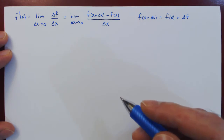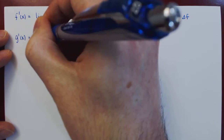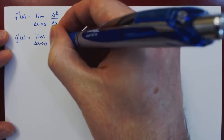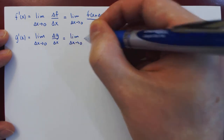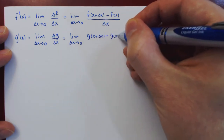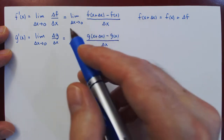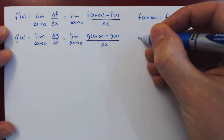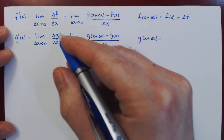The same is true for the second function g. So g prime of x is the limit as delta x approaches 0 of the change in g versus the change in x — that is, g(x + Δx) minus g(x), divided by delta x. And likewise, if we isolate g(x + Δx), we obtain g(x) plus delta g.